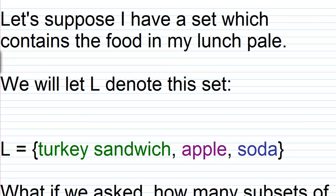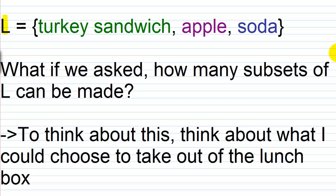Now I want to move into something a little more complex: how to determine exactly how many subsets can be made from a given set. To demonstrate this before we get into our general formula, let's suppose I have a set which contains the food in my lunch pail, and we're going to let capital letter L denote this set. In my lunch pail, I have a turkey sandwich, an apple, and a soda — those are the elements of that set. The question is: how many subsets of L can be made?